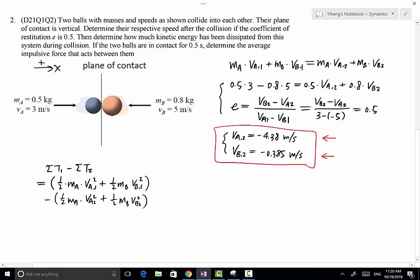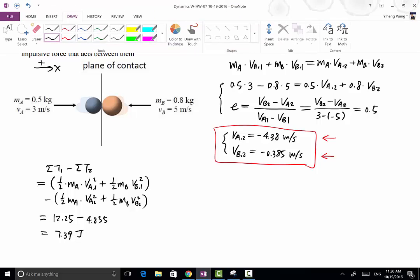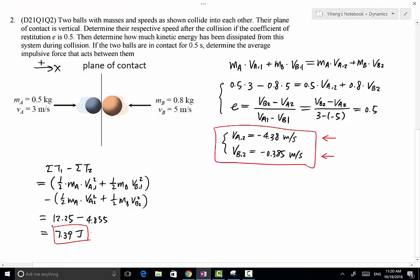Since we know all these values, we can calculate. The initial kinetic energy of the system is 12.25 joules, and the final kinetic energy is 4.855 joules. As a result, the change is 7.39 joules, which is how much has been dissipated during this collision.